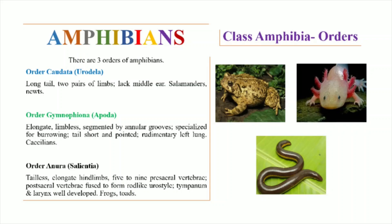Next is Order Gymnophiona or Apoda. Apoda means limbless. They have elongated limbless bodies that are segmented by annular grooves, which are basically depressions in the skin due to which the body appears to be segmented. Their bodies are modified for burrowing and they possess a short and pointed tail. They have a rudimentary left lung. These include Caecilians.